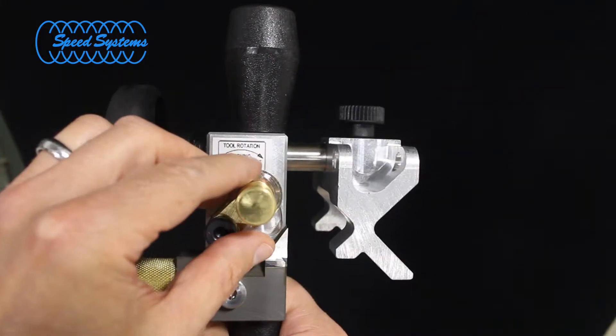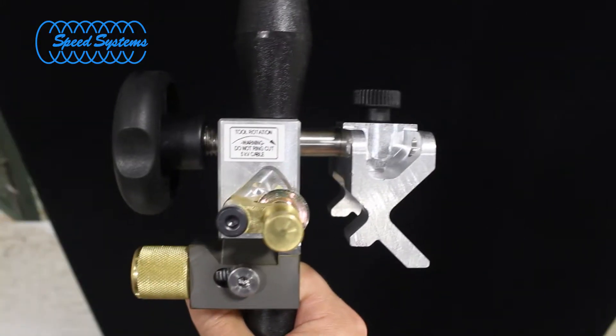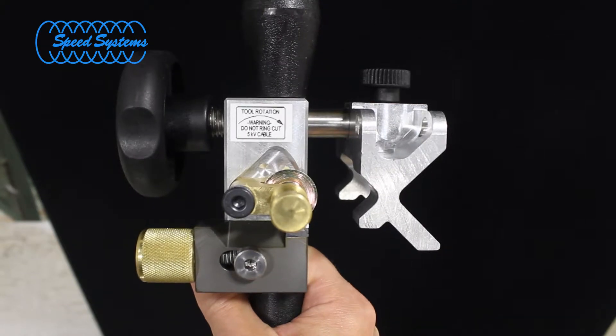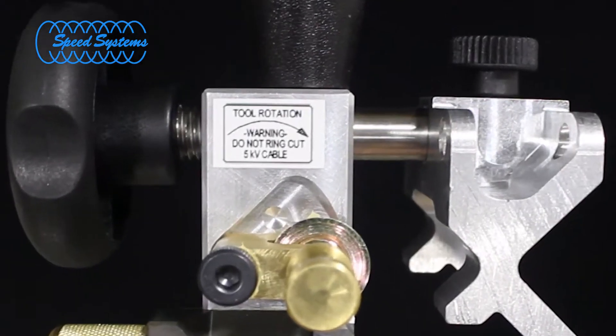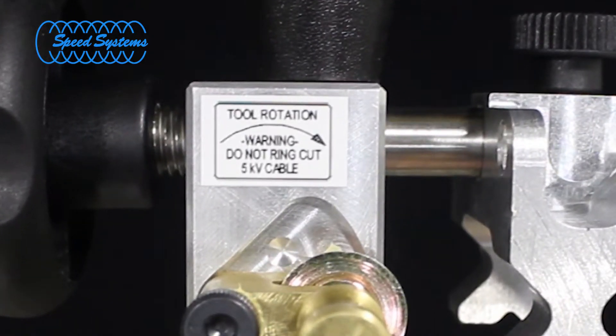Move the ringing blade to the down position when mid-span stripping 15kV through 35kV cable. Do not engage the ringing blade on 5kV cable.